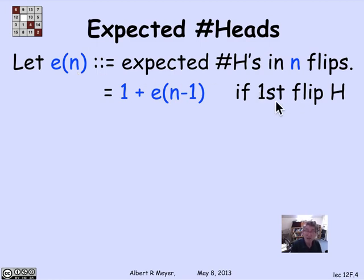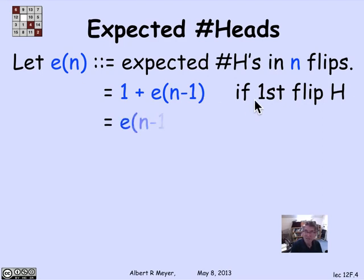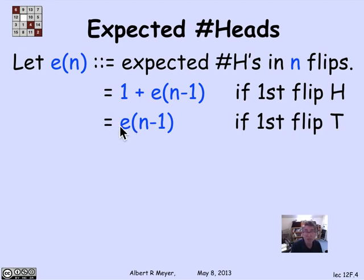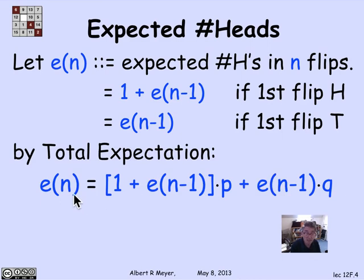If I flipped a head first, then I've got a 1 adding to my total number of heads, and then I'm going to do n minus 1 more flips. So the expected number of heads is going to be that 1 plus the expected number on the rest of them. If the first flip was a tail, then the total expected number of heads is simply the expected number of heads on the rest of the flips. These are two cases where I can apply total expectation. So by total expectation, E(n) equals 1 plus E(n-1) times the probability of a head, plus E(n-1) times the probability of a tail.